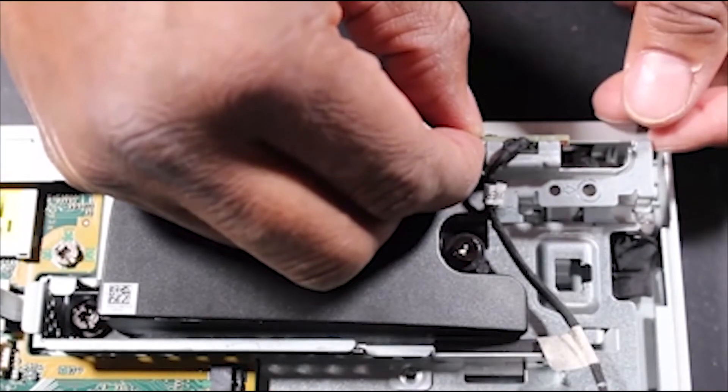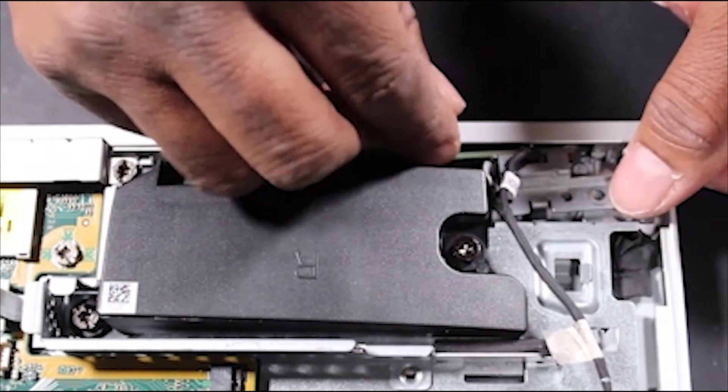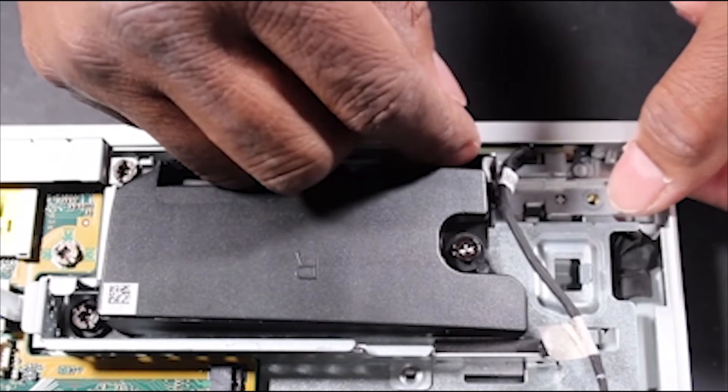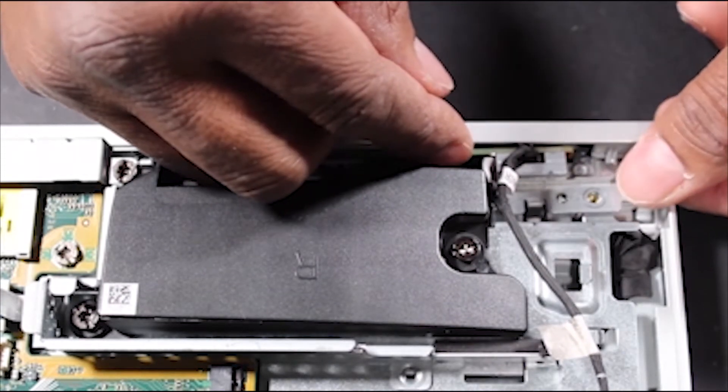Align the power button board assembly above the locator pins on the panel assembly beneath, and then press the power button board assembly down into position.